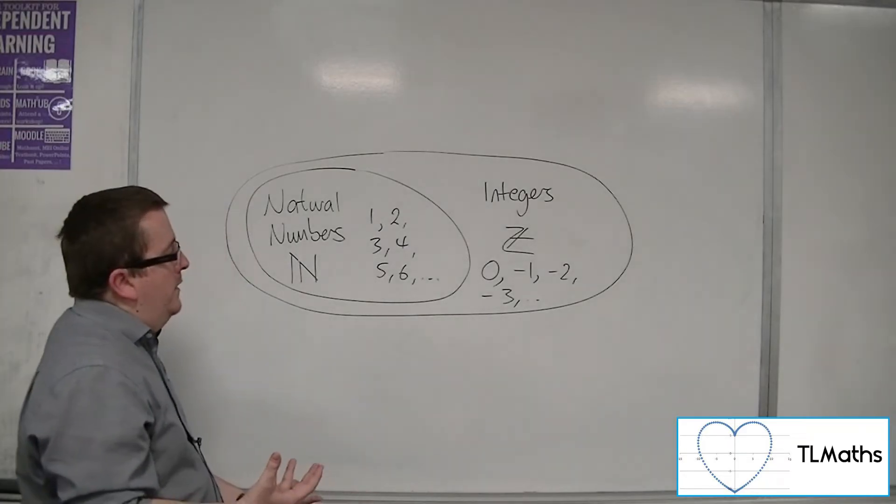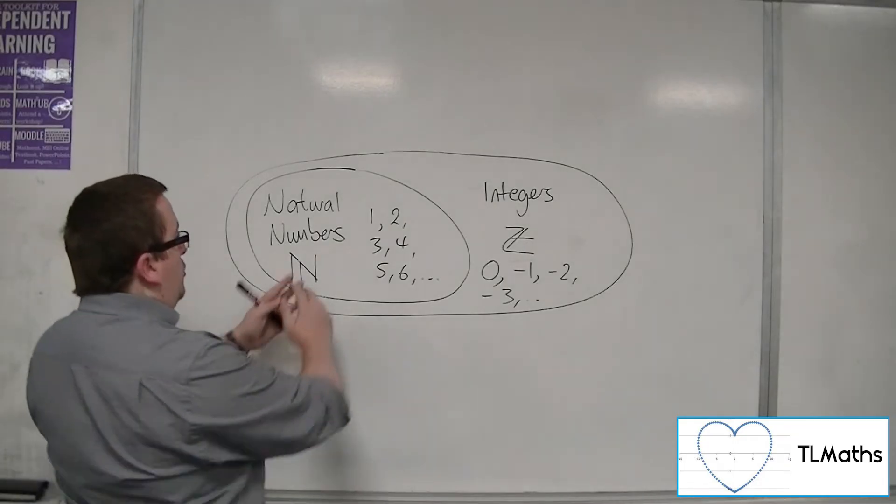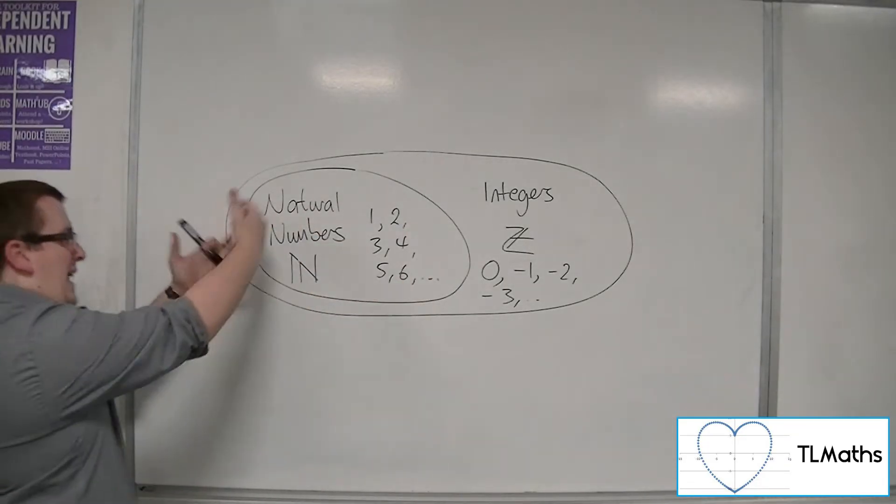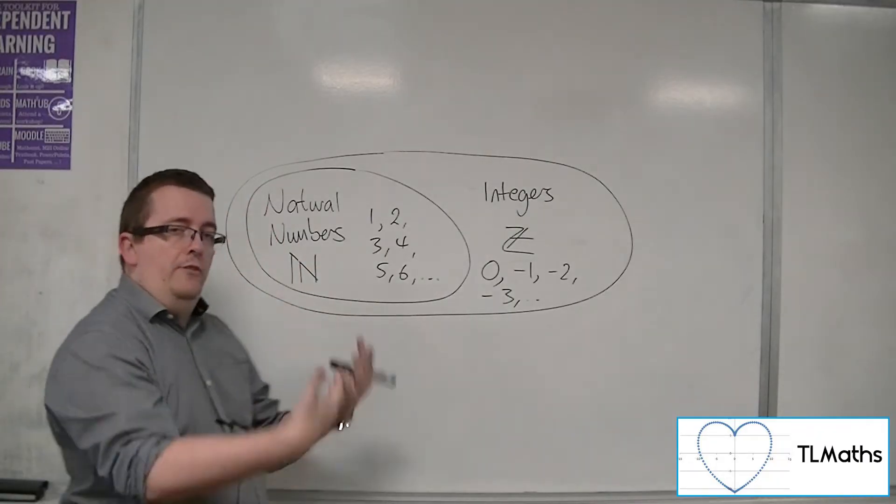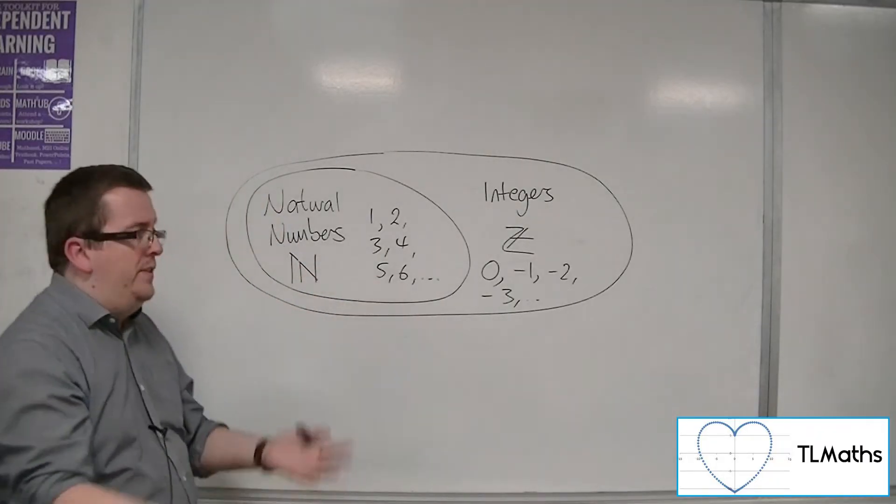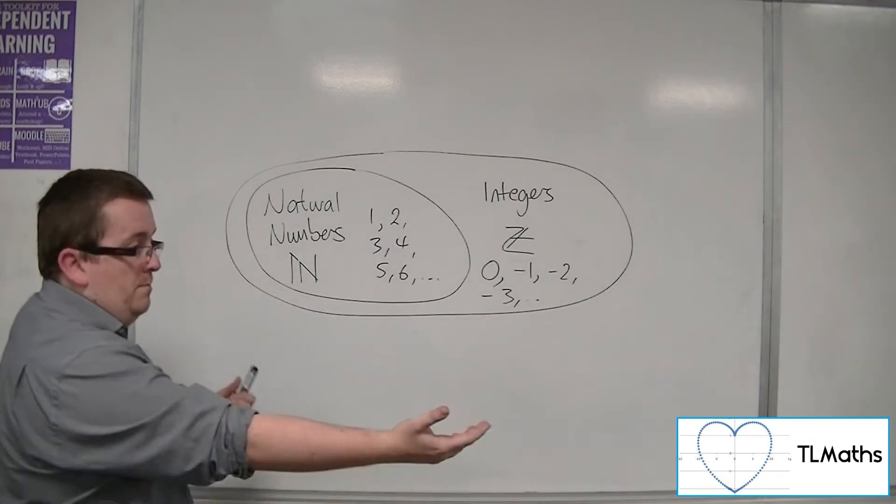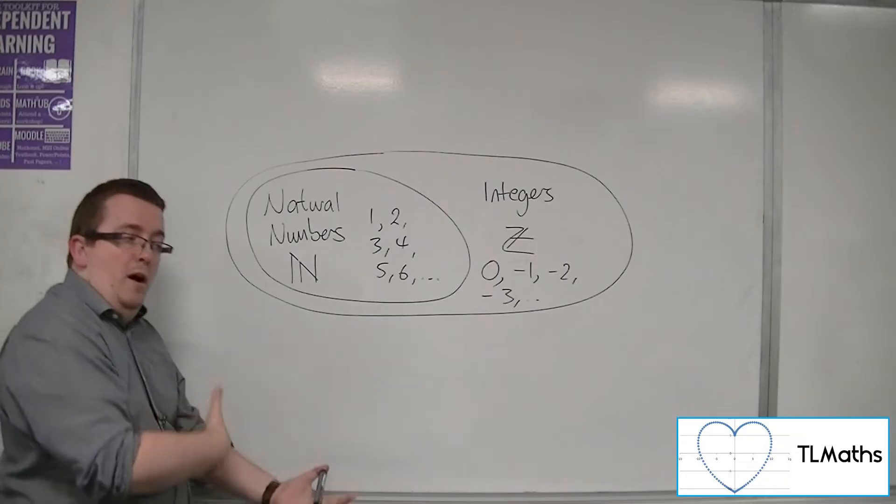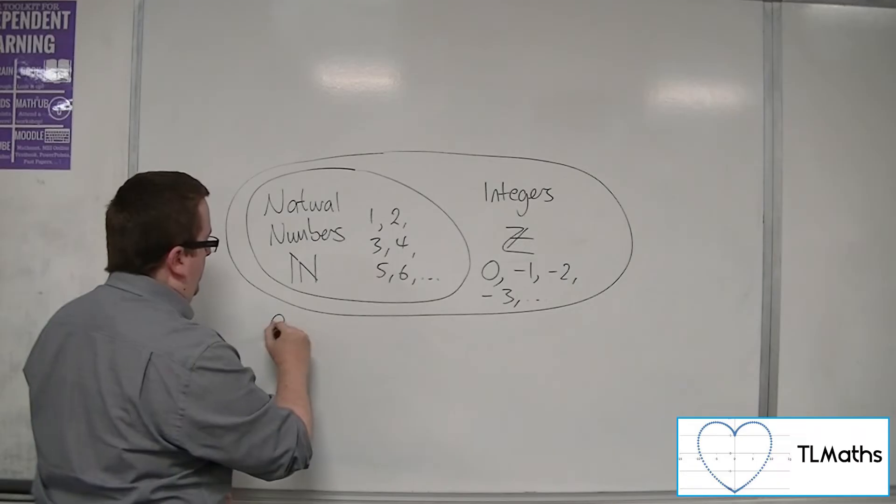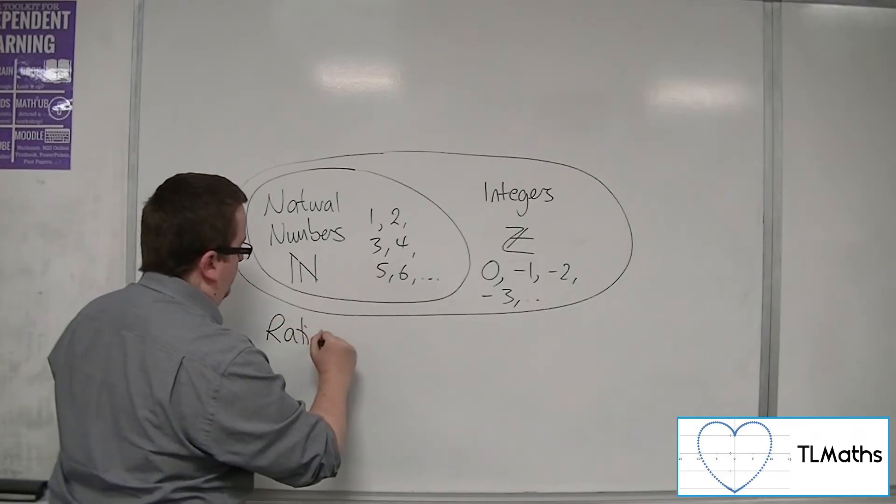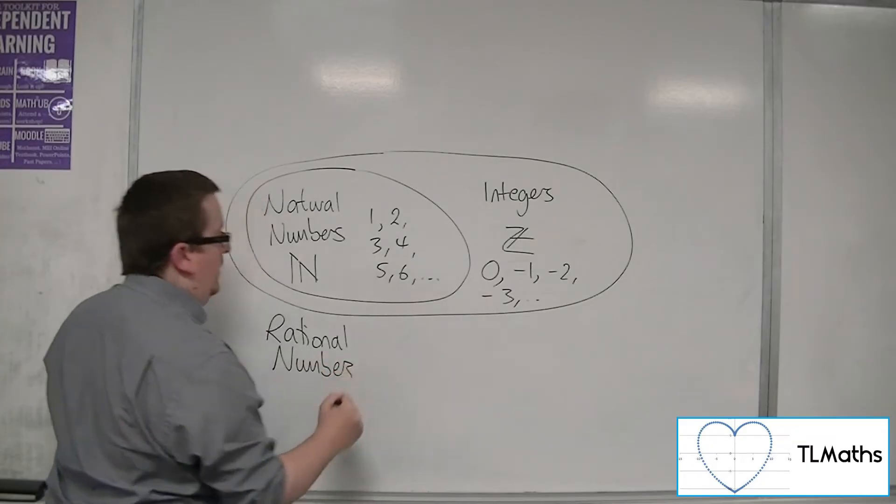So the world of fractions include all the natural numbers and all the integers, but also a half, a third, three quarters, five sevenths, eight ninths, whatever fraction you like, plus minus eight ninths or minus five sevenths. And we call those the rational numbers.